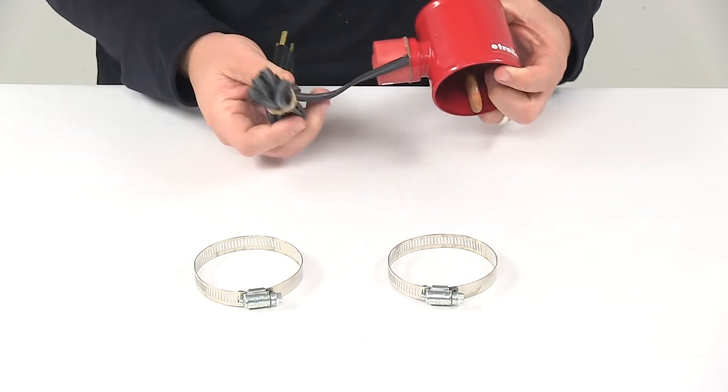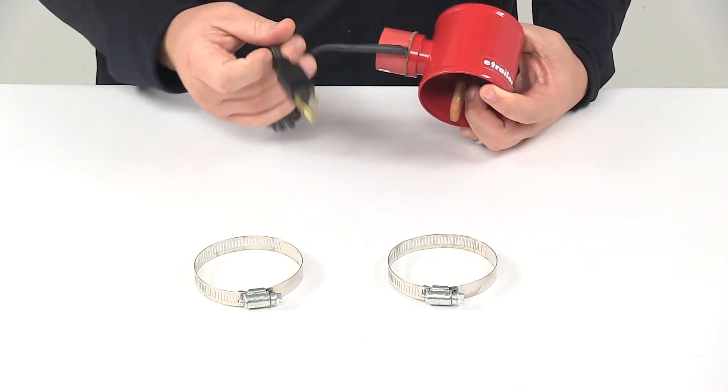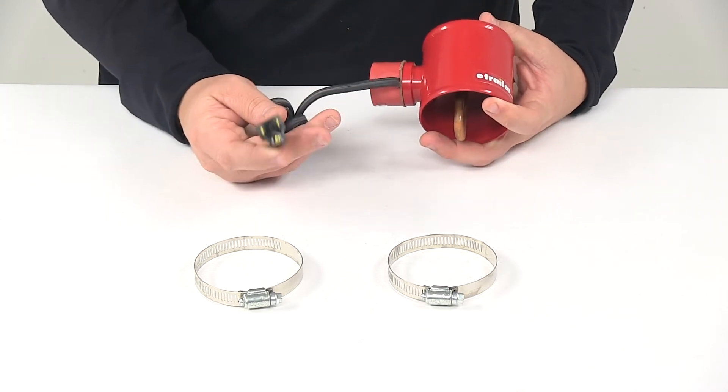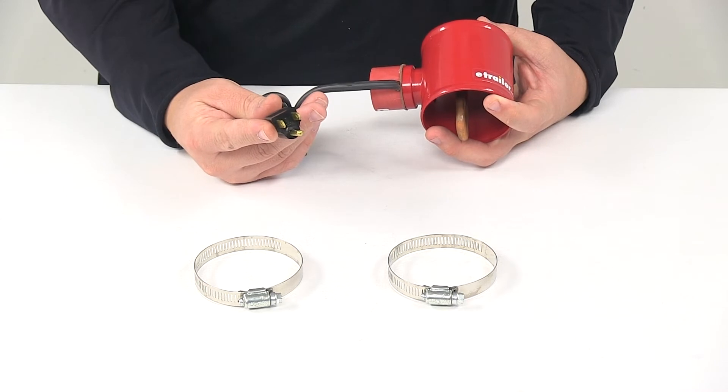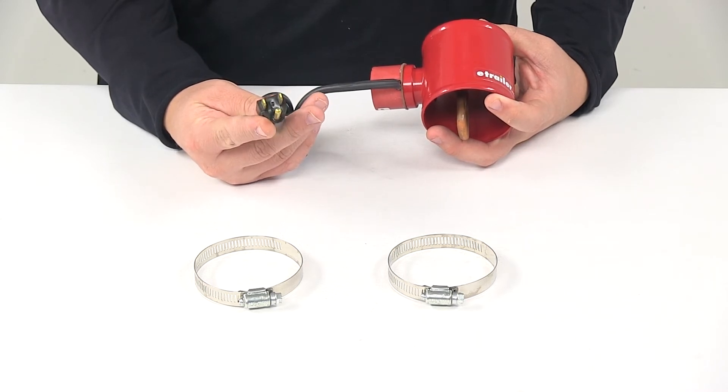It has a five-foot long power cord that can be routed through your grill. It plugs into a standard 120-volt AC outlet or extension cord with a three-prong plug.